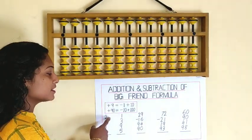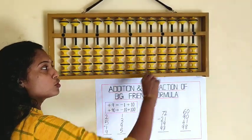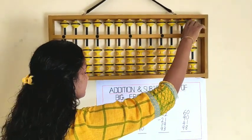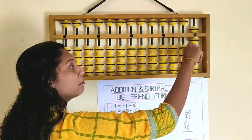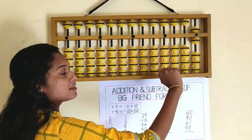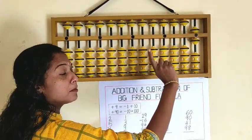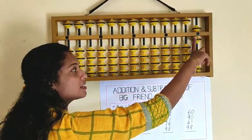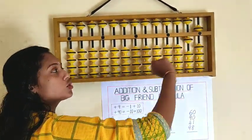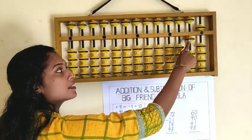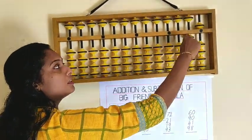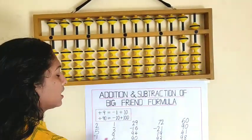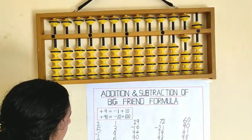The first sum is 2 plus 5 minus 1 plus 9. You know the formula of plus 9 is minus 1 plus 10. So what is the answer? 10 plus 5 equals 15. Our answer is 15.